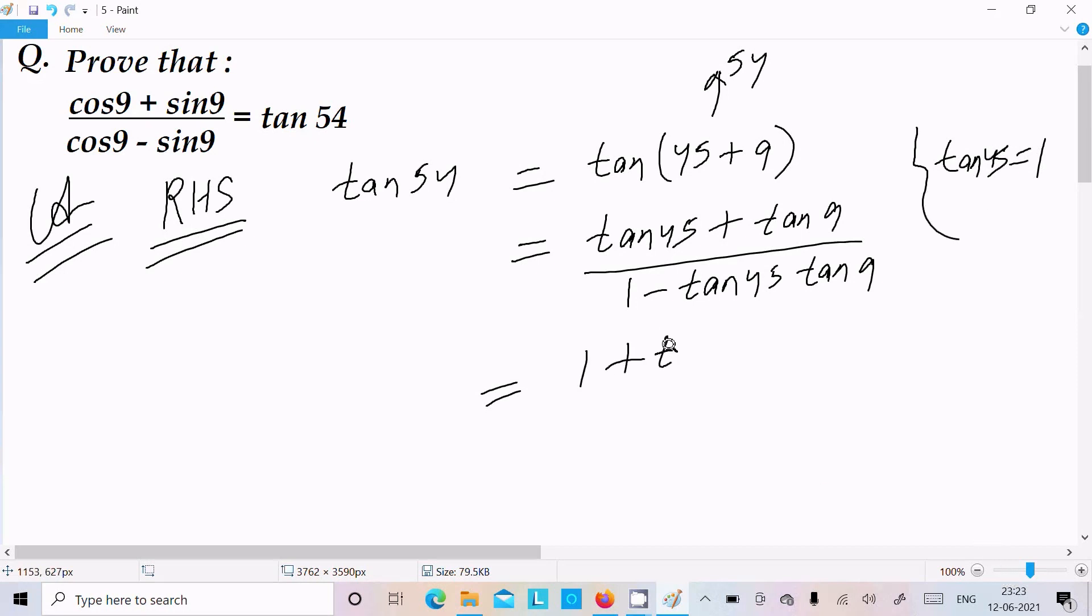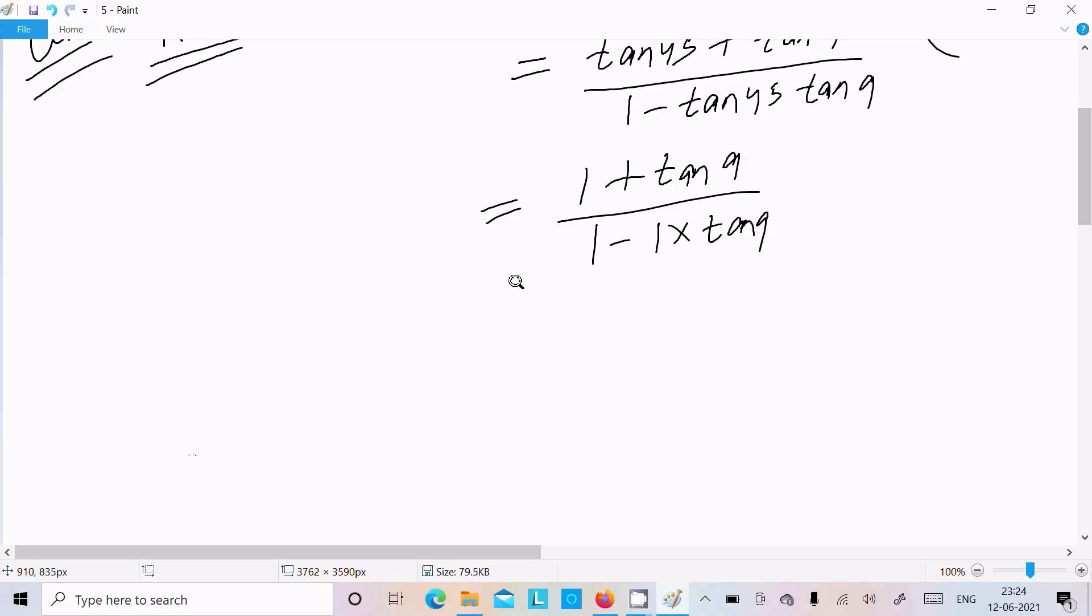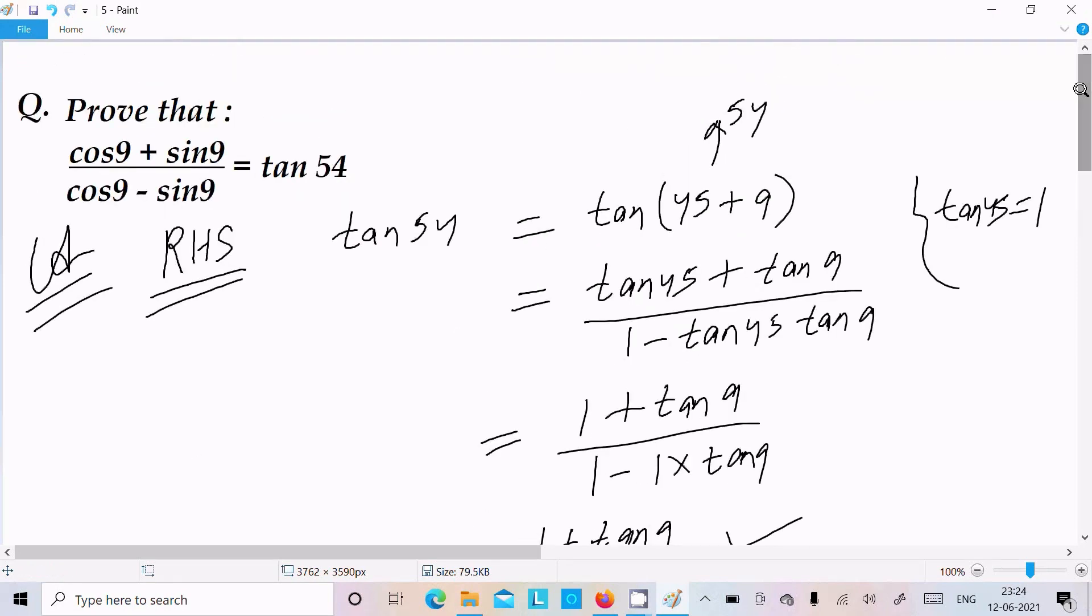So 1 plus tan9 divided by 1 minus 1 into tan9, then write one more time 1 plus tan9 divided by 1 minus tan9. Convert this into sine and cos form because on the left hand side cos and sine form.